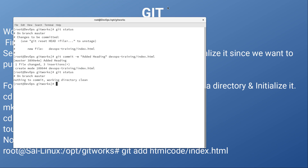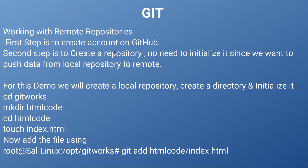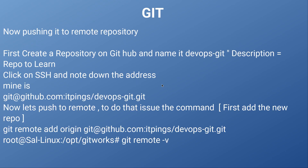We have now accomplished three tasks. First was to create our account on GitHub. Second was to create a repository. Third was to create a directory on our local computer. We already checked the status — it showed that everything is done, we committed the changes. Now the next step is we need to push it to the remote repository.